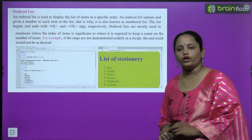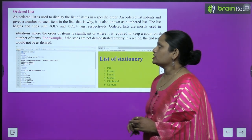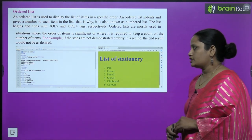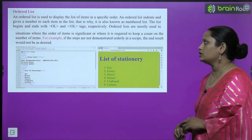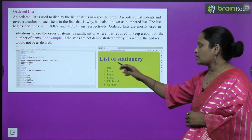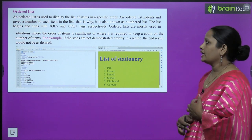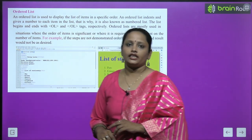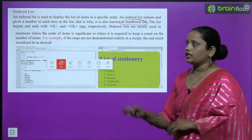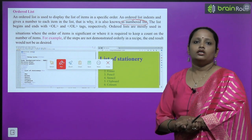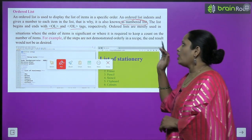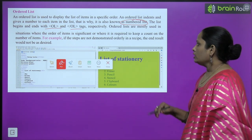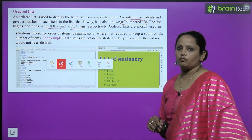That was our unordered list. Now comes the ordered list. An ordered list is used to display the list of items in a specific order. It indents and gives a number to each item in the list — as you can see, numbers 1, 2, 3, 4, 5, 6 are given. That is why it is also known as a numbered list. An unordered list is called a bulleted list, and an ordered list is called a numbered list. This list begins and ends with the ol opening tag and closing tag.